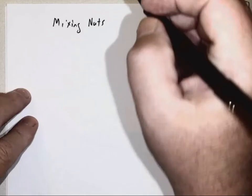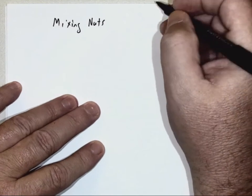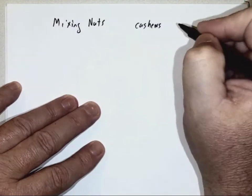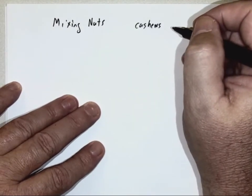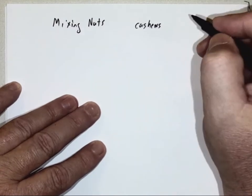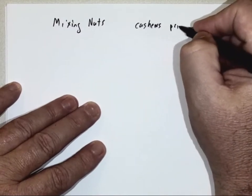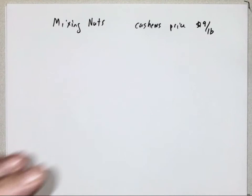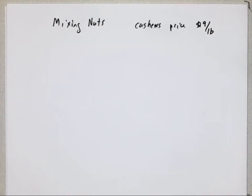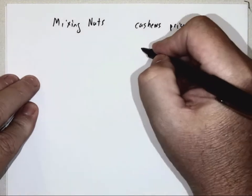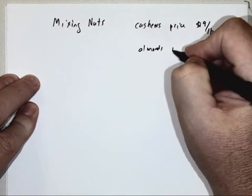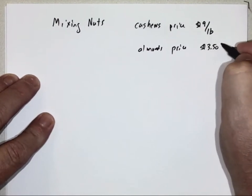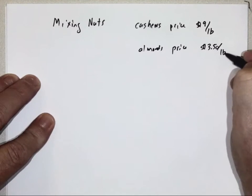In other words, in the ideal case, the nuts are sold separately. I'm going to read through the problem again and write down the information. It says cashews normally sell for $9 per pound — so if you buy two pounds it costs $18, three pounds costs $27. Then it says almonds are $3.50 per pound. Almonds are a lot cheaper, not as expensive.